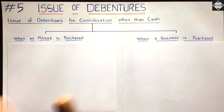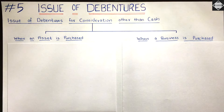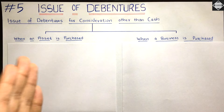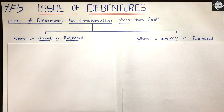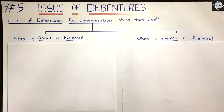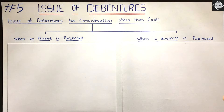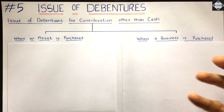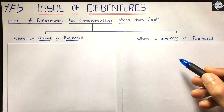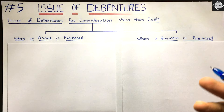Here, debentures are being issued but for consideration other than cash — in exchange for debentures the company is not getting money, it is getting something else. There are two scenarios: first, the company is getting an asset such as machinery; second, a business is being purchased. When you acquire another company you pay purchase consideration, and that payment can happen in the form of debentures.